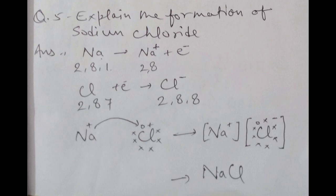Lekin sodium mein positive charge aa gaya aur chlorine mein negative charge — donon ek doosre ki taraf attract ho gaye aur donon ne ionic bonding kar li. Aap idhar dekh sakte hain — sodium ne apna ek electron chlorine ko diya aur chlorine ne receive kar liya. Is tarike se NaCl ban gaya — normally isko NaCl likhte hain, yaani khane ka namak.